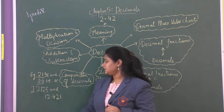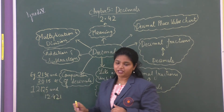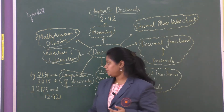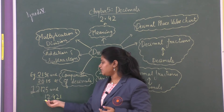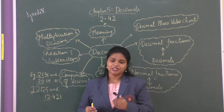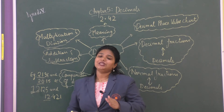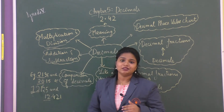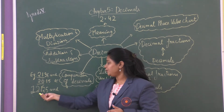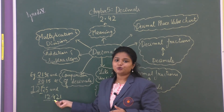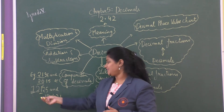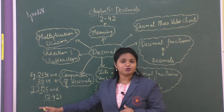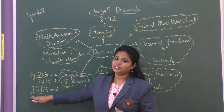Second example: 12.125 and 12.421. First we look at the whole number part — both are 12, so we cannot compare yet and move to the decimal part. We start comparison from the tenths place: here we have 1 and here we have 4. Since 4 is greater than 1, we can say that 12.421 is greater than 12.125.